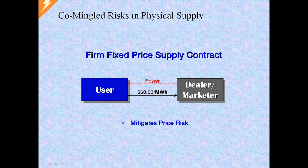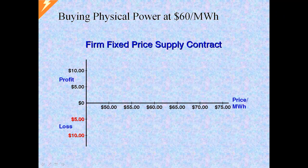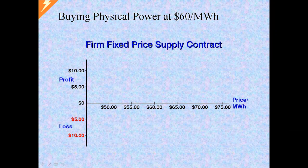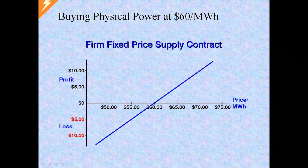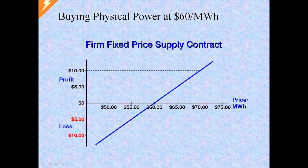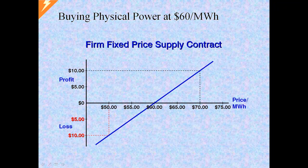This contract hedges price risk. If we look at the risk profile of the long position created by the physical contract, it is a straight upper sloping line intersecting at $60. If prices rise to $70, there is a profit of $10. If prices fall to $50, there is a loss of $10.